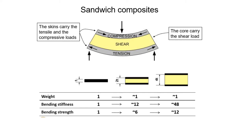In sandwich composites, the insertion of a core increases the thickness of the structure, thus increasing flexural stiffness and strength without increasing weight. The skins carry the tensile and compressive loads, whereas the core carries the shear load. The weight, bending stiffness and bending strength comparison of different thickness of the core has been shown.